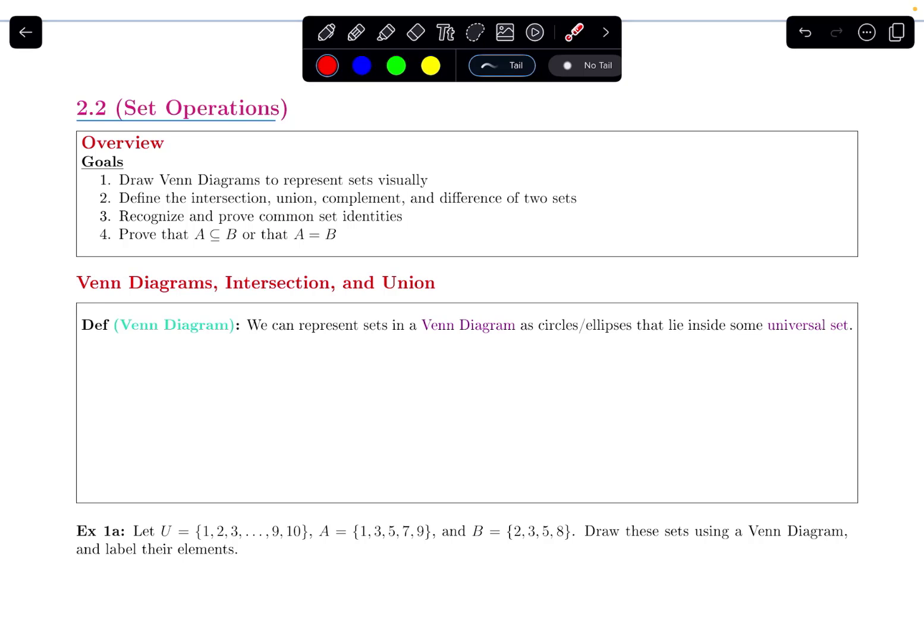In this video, I want to focus on Venn diagrams and what the intersection, the union of sets are. So let's start off with Venn diagrams. You've likely seen these before in previous classes, but let's do a review here. We can represent sets with a Venn diagram using circles and ellipses that lie inside of some universal set.